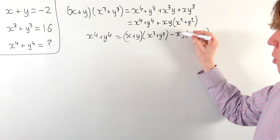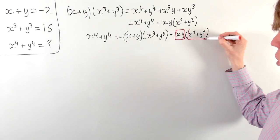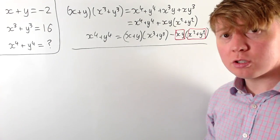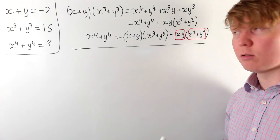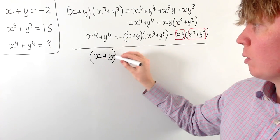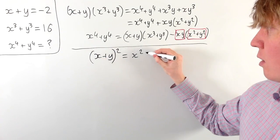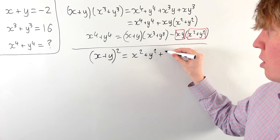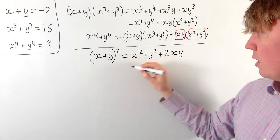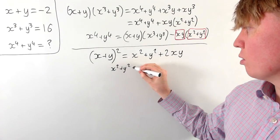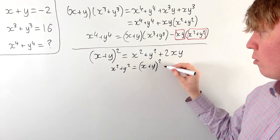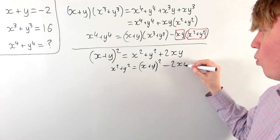So we need to find the value of xy and also work with x squared plus y squared. We first look at x squared plus y squared. We can notice that x plus y, which we know, if we square it we get x squared plus y squared plus 2xy. So we can express x squared plus y squared as x plus y all squared minus 2xy.